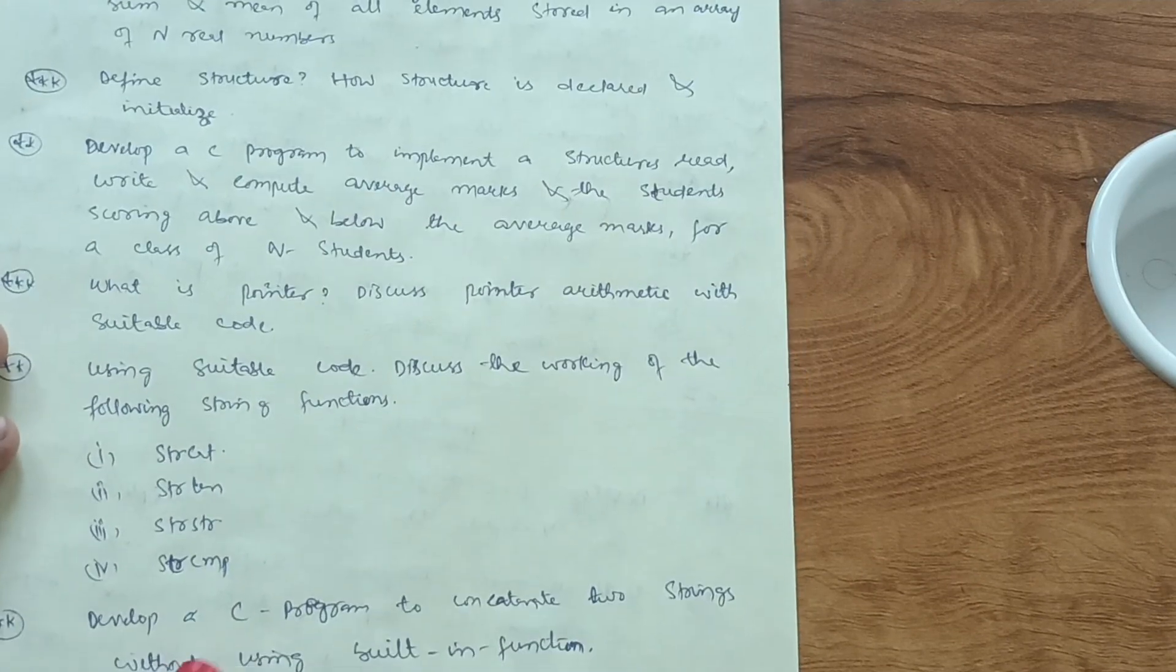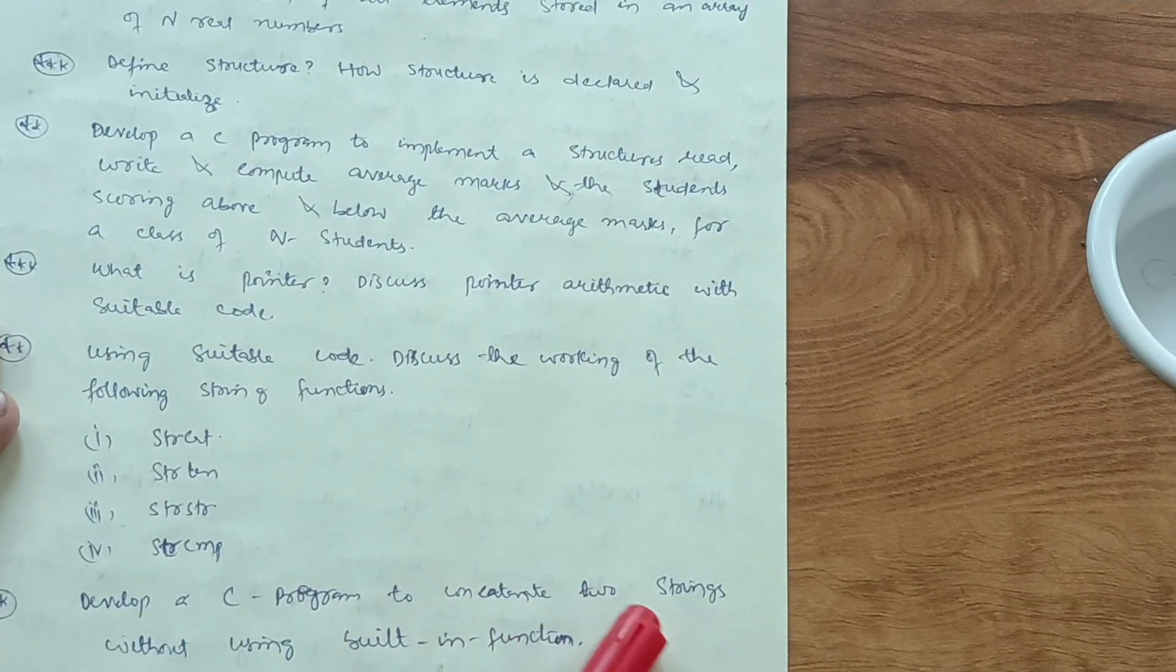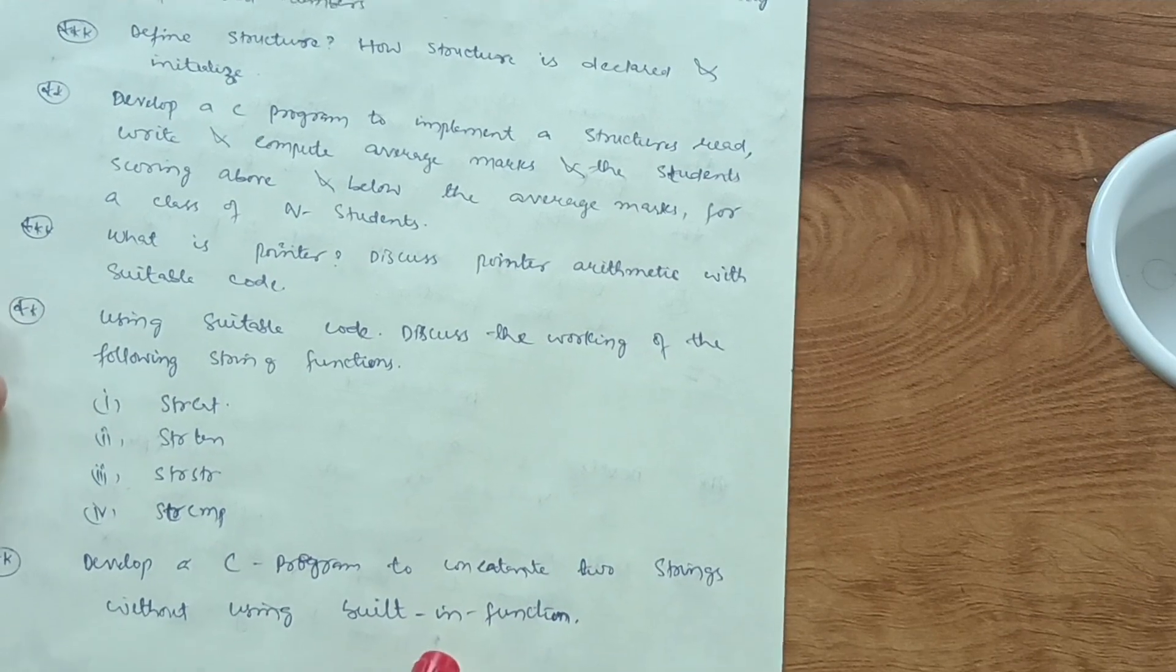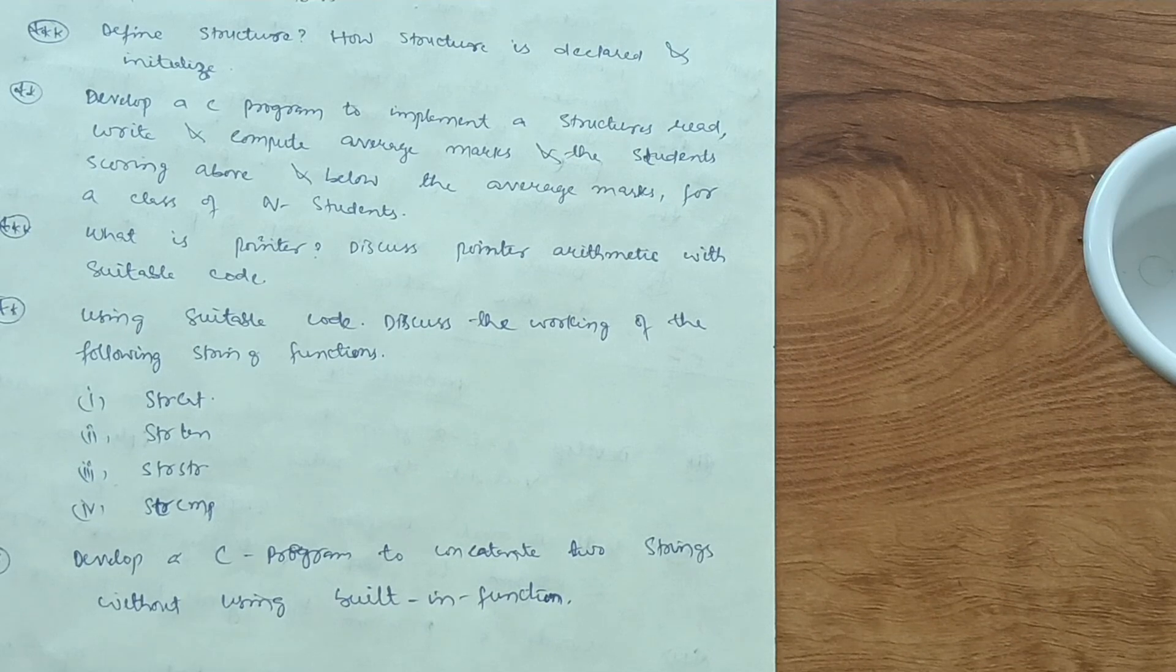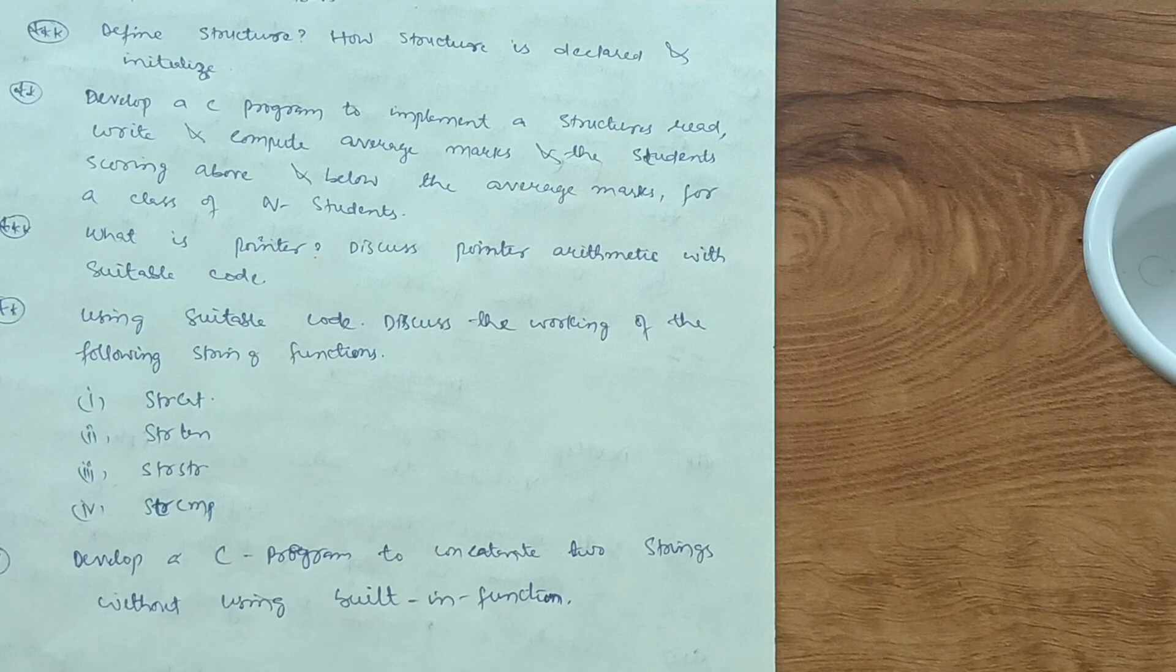And develop a C program to concatenate two strings without using built-in function. These are the important questions from module fifth which you have to cover so that it will become easy for you to at least score, at least conquer 60 to 70 marks in this particular subject if you are just searching for passing, my dear friends.